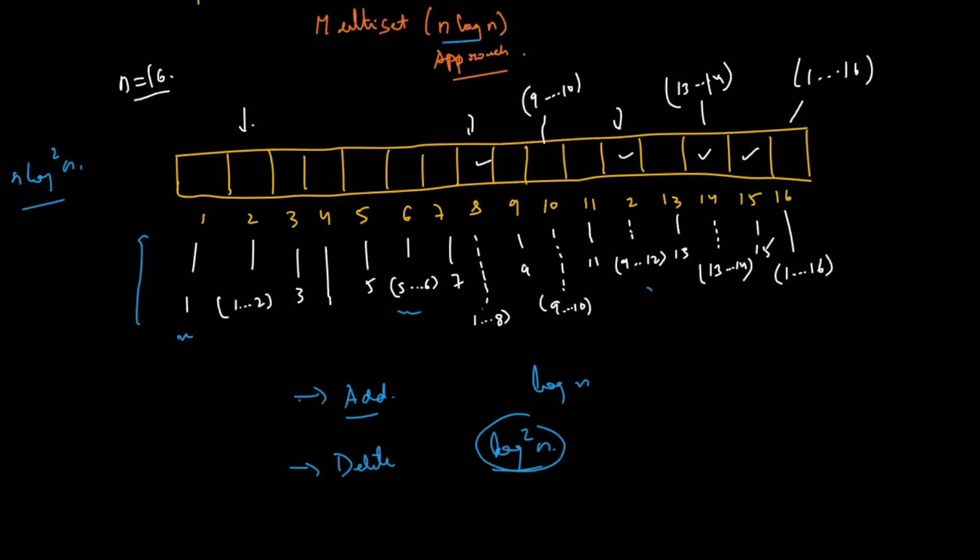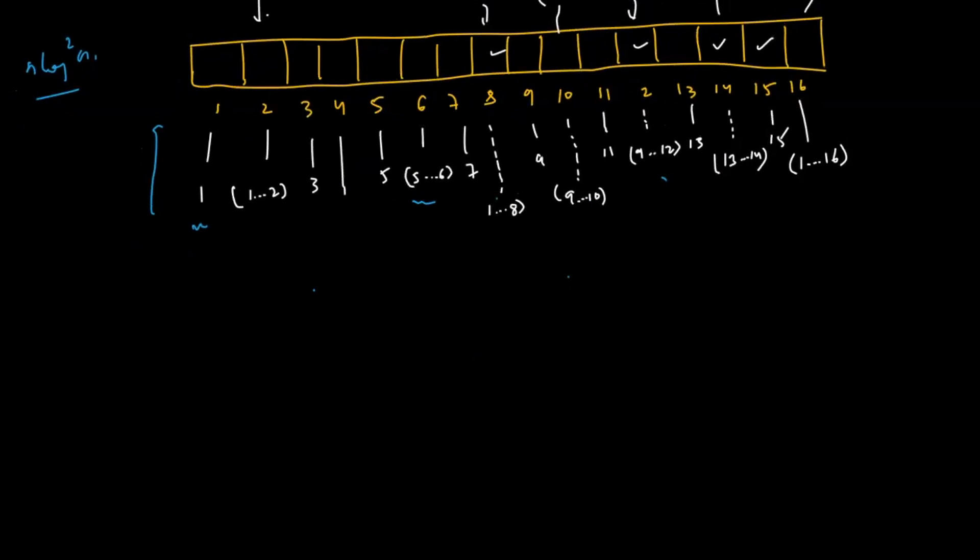I'll first explain you the gist and then we can try to solve this. The problem can be solved using binary lifting. Let's take these values. Now these values do not represent Fenwick tree. These values are the simple prefix sum.